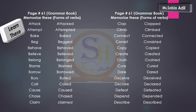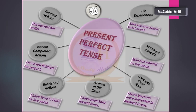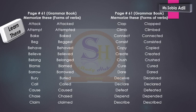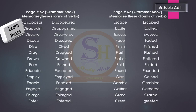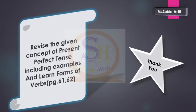I hope that all of the points are clear, students. You need to memorize the concept of present perfect tense including the examples, and you will also learn the forms of verbs on page number 61 and page number 62 in your grammar book. Your diary work: revise the given concept of present perfect tense including examples, and learn forms of verbs pages 61 and 62. Thank you very much.